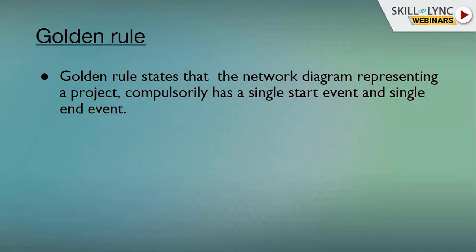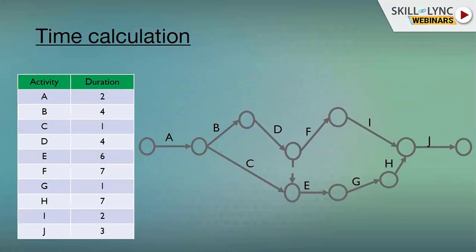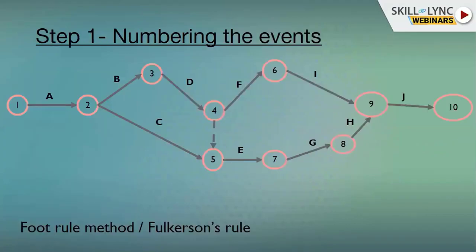Our planning is flawed which fools the software into giving up false results. Moving on to the time calculations, using the same network, I have put in some random durations to the activities: A to B for C one day, D four days, E six days, F seven days. We'll be assigning these using time calculations.